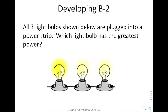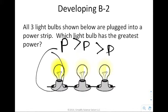All three light bulbs shown below are plugged into the power strip. Which light bulb has the greatest power? You have to look at it in terms of the brightness. This one is the brightest, so this one has the highest power. This one is next, and this one gives off the least power. It's kind of tough to tell the difference between these two, but this one is clearly brighter than the other two.